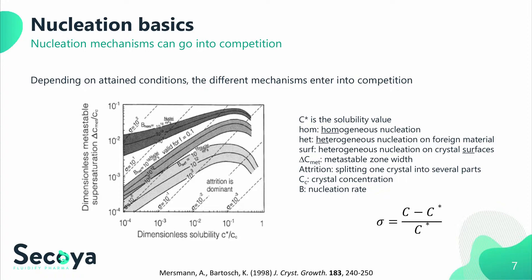Also, nucleation regimes will run into competition, especially at lower supersaturation sigma. Splitting of crystals into fragments — called attrition — and surface and heterogeneous nucleation on foreign material compete with each other. Key to avoid this competition is to increase sigma as much as possible by creating a large difference between actual concentration and the solubility concentration at a given temperature.